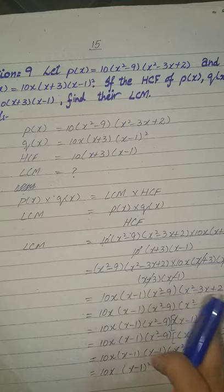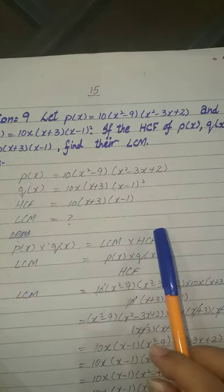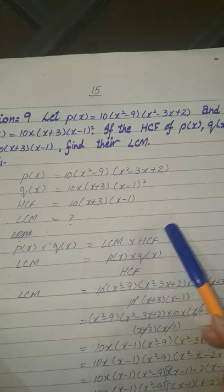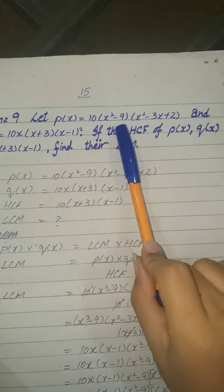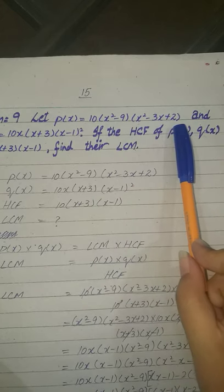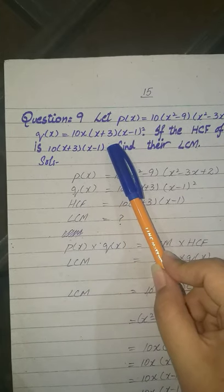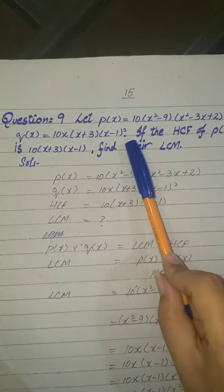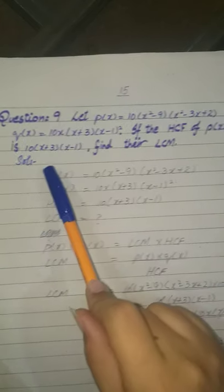So first of all let's see what the question is discussing, what is given and what we have to do. Let P(x) is equal to 10 into (x² - 9) into (x² - 3x + 2) and Q(x) is equal to 10x into (x + 3) into (x - 1)² if the HCF of P(x) and Q(x) is given.